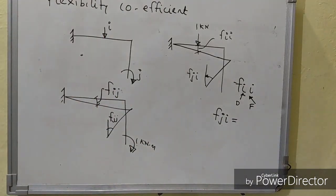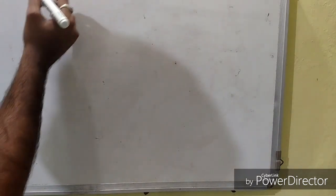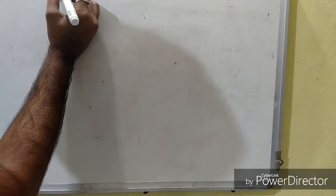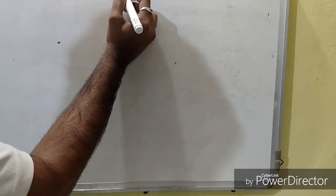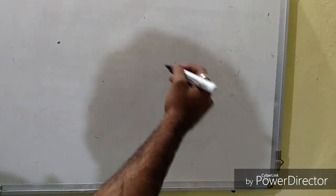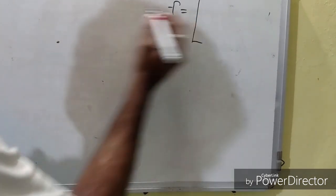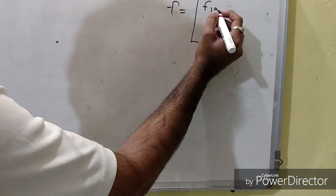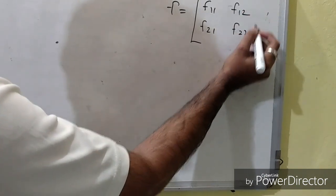When two coordinates are given, we write the flexibility coefficients as F11, F12, F21, and F22. We then assemble these into the flexibility matrix, which is a 2×2 matrix arranged as: F11, F12 in the first row and F21, F22 in the second row.